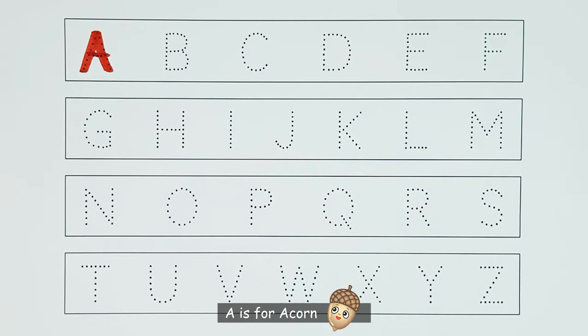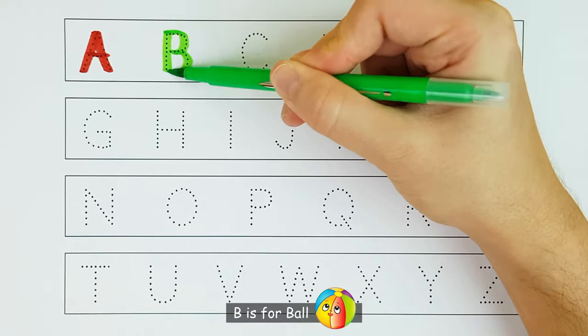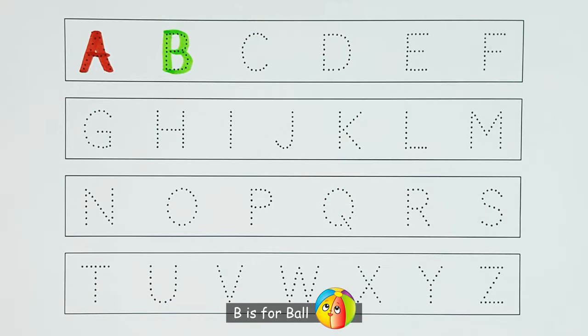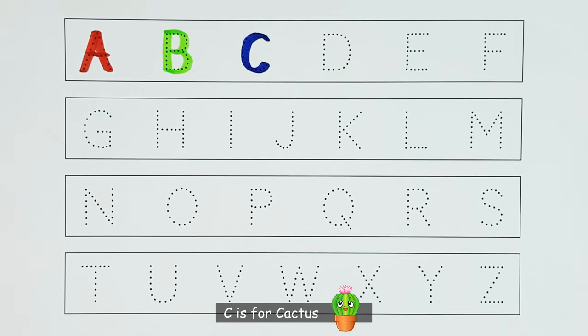A. A is for acorn. A. B. B is for ball. B. C. C is for cactus. C.